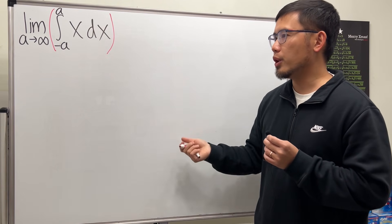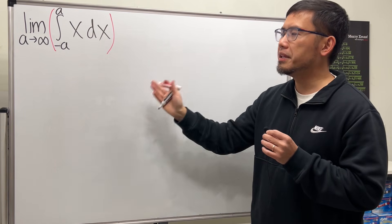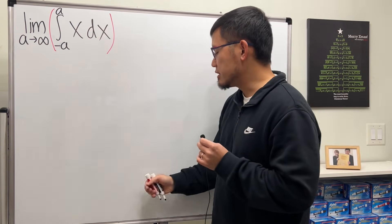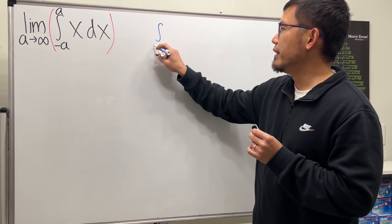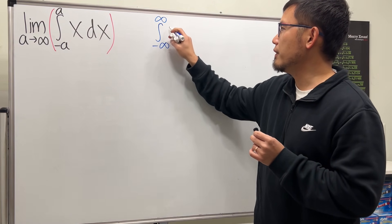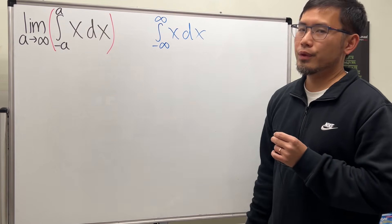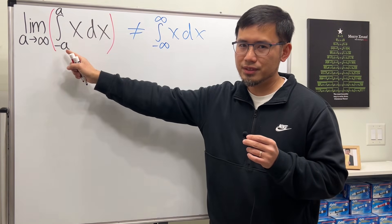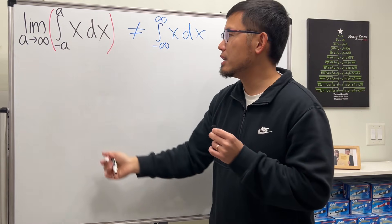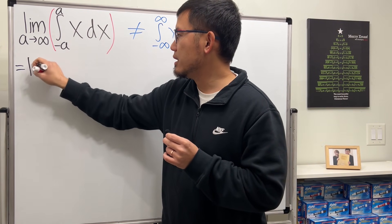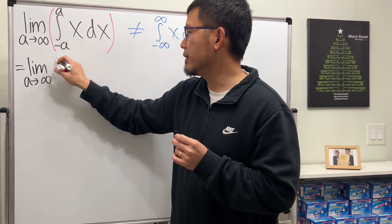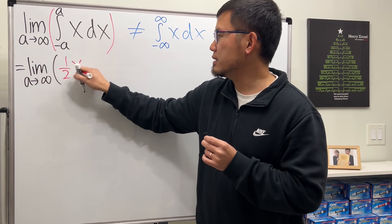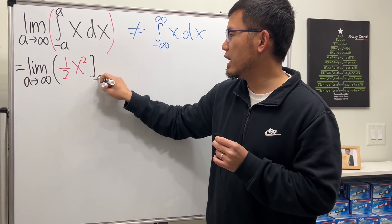I know what you're thinking — isn't this the same as the integral going from negative infinity to positive infinity of x dx? No, they are not equal. But first, let's handle this inside out. We get the limit as a goes to infinity of integrating x, which gives one half x squared, evaluated from negative a to a.